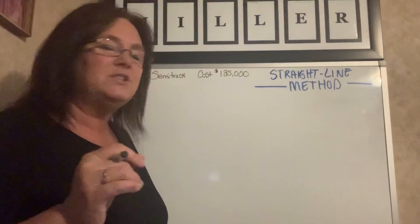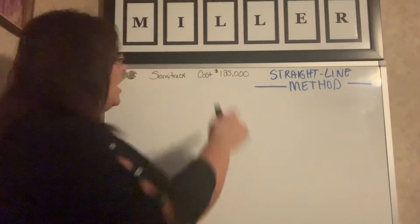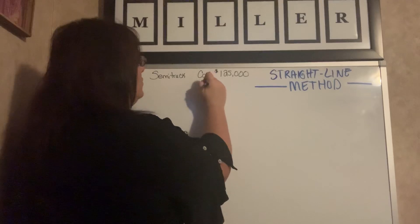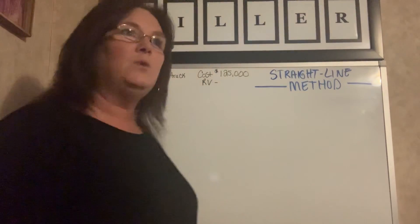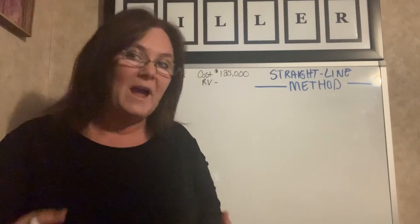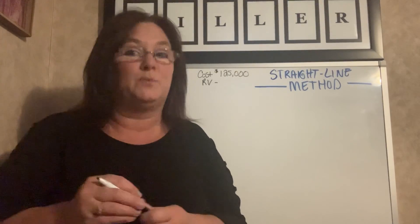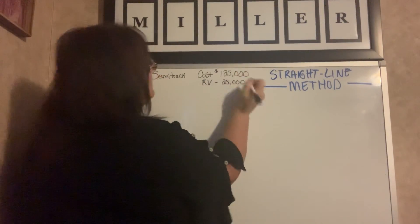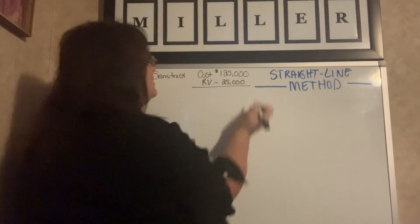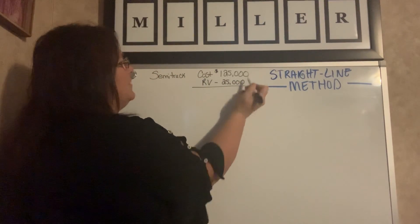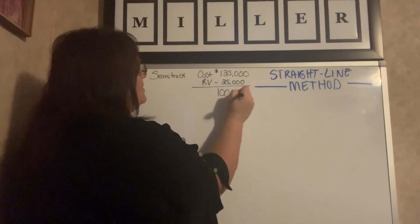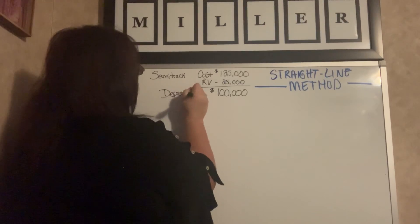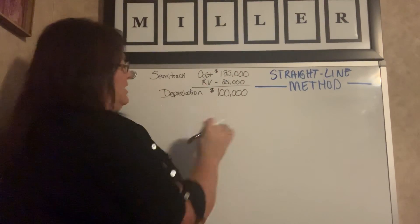In this problem, our company purchased a semi-tractor trailer for $125,000. That's what I have listed as our cost. We also have to calculate or subtract what's called residual value. Residual value is also your salvage value — how much your asset is expected to be worth when you have depreciated it, or how much it's worth when you're done with it. In this case, that number was $25,000. So we subtract $25,000 from $125,000, which gives us $100,000. That number is our depreciation amount — that's how much we depreciate this machine.